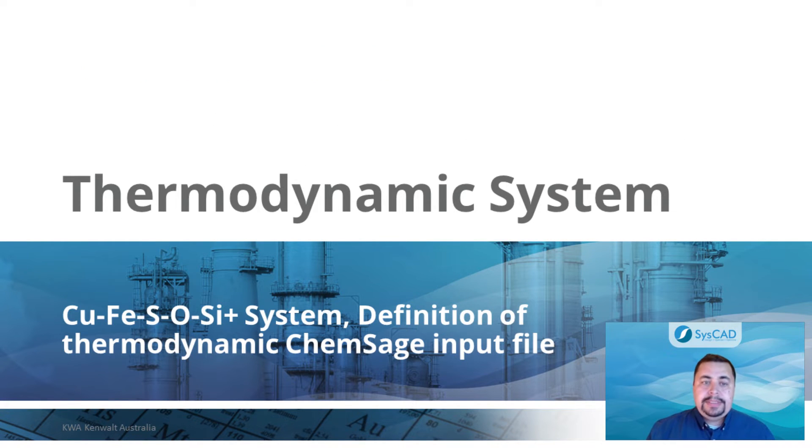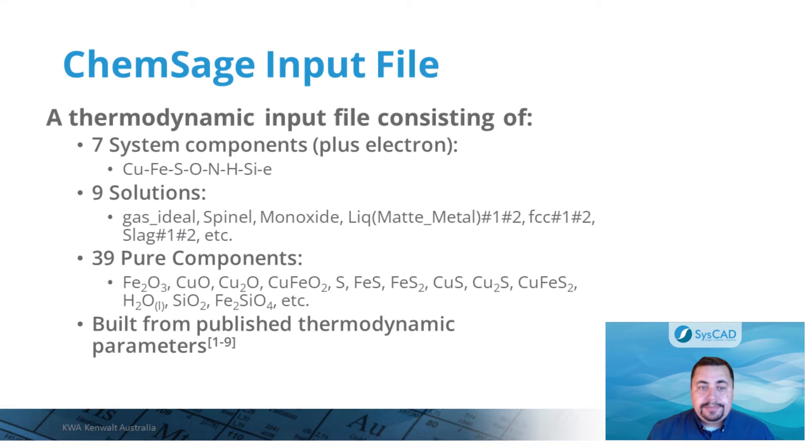Before implementing the model in SysCAD, the first step is to specify the thermodynamic system to simulate the converter process. In this case, we focus on the primary copper smelting system, where a copper matte or sometimes a white metal is produced in a smelting furnace or reactor and fed to the Peirce-Smith converters. The main system components selected for this model are copper, iron, oxygen, sulfur, nitrogen, hydrogen, and silicon.